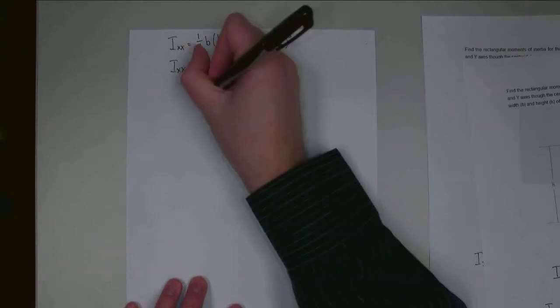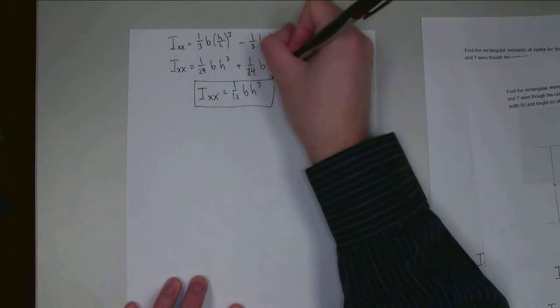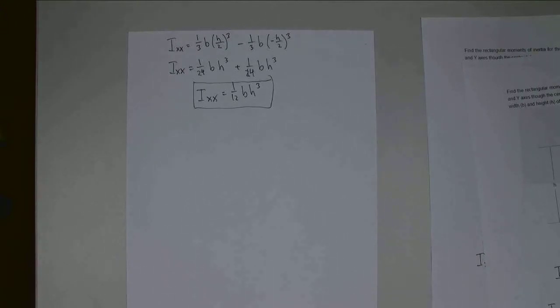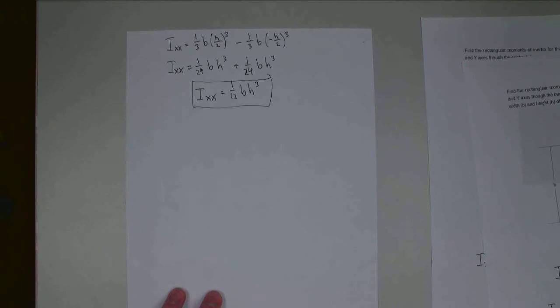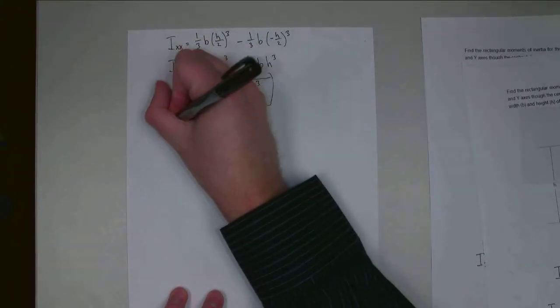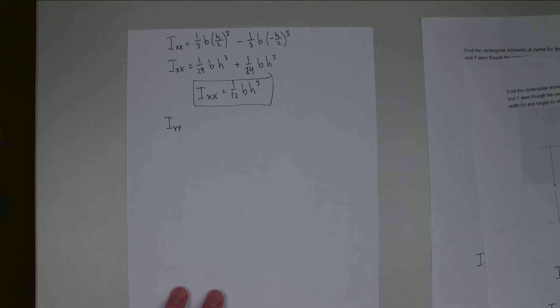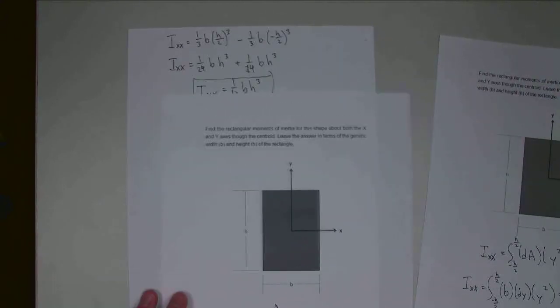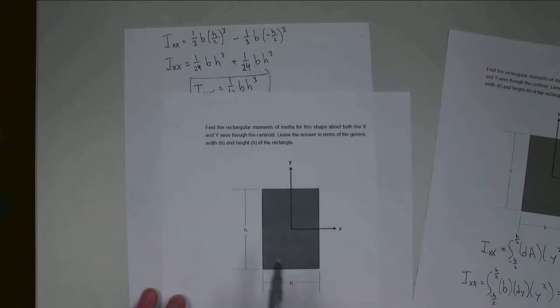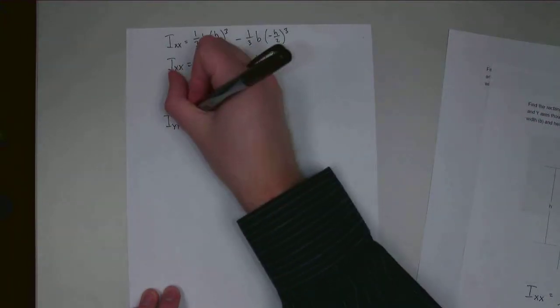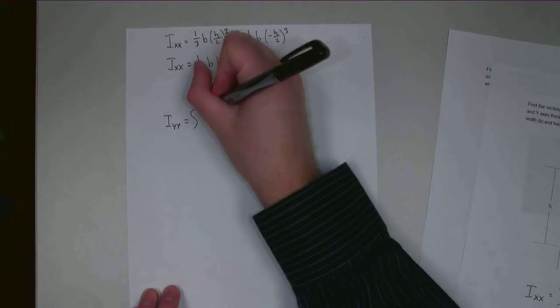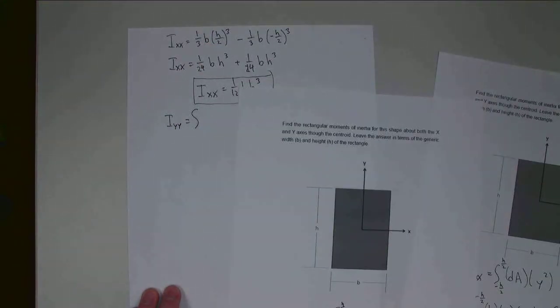So that is where the general rectangular area moment of inertia of a rectangle about the X-axis comes from — this is something we can check in our moment of inertia tables. I can do the same thing for I-YY, the rectangular area moment of inertia about the Y-axis. Rather than going from bottom to top, I'm now going left to right, from the leftmost point at negative B over 2 to the rightmost point at B over 2.